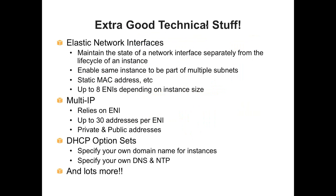Elastic network interfaces are so cool because you can set up all these different IP addresses, MAC addresses, everything associated with the network interface, and move it around. You can take a full network environment and attach it to a different EC2 resource. Say you have a database and a hot standby — you can move the elastic network interface from one server to the other without any downtime. For some of our instances, you can put 200+ addresses on the network interface. These can be public or private, and you can associate different DHCP option sets within the VPC.